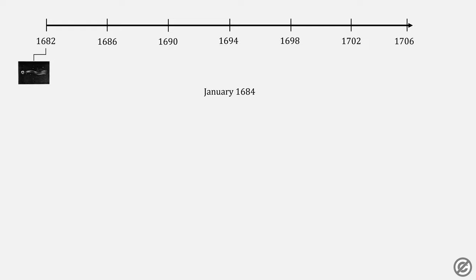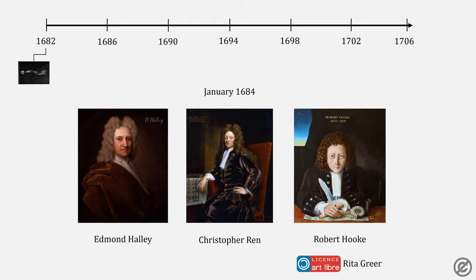In January of 1684, Edmund Halley, Christopher Wren, and Robert Hooke met to discuss planetary motion and the inverse square law. Hooke claimed to have derived it, but after some time was never able to provide evidence of doing so.